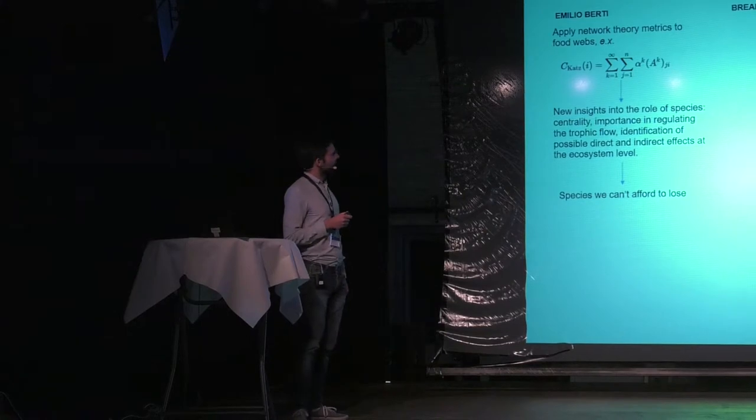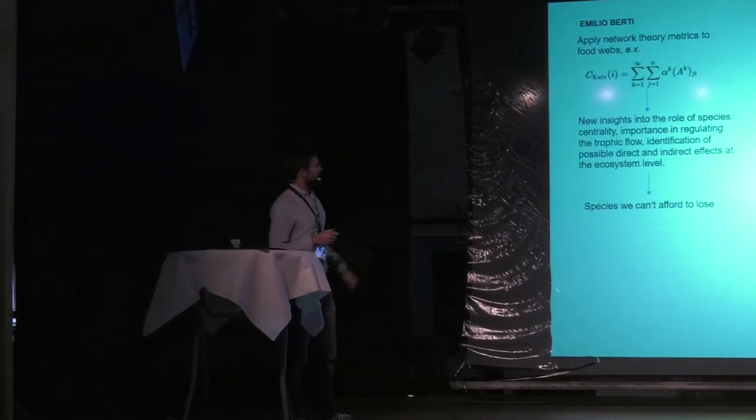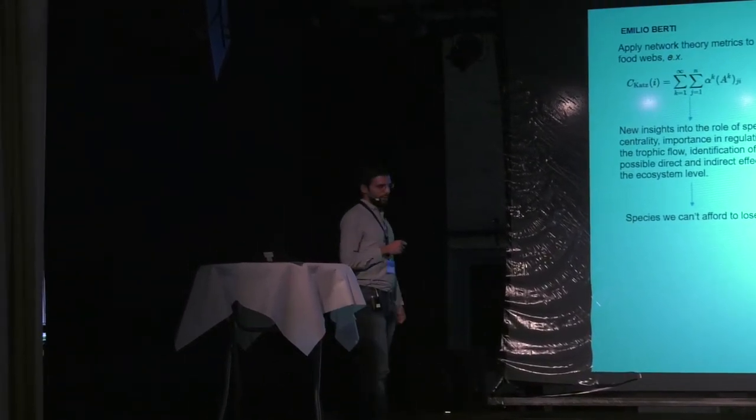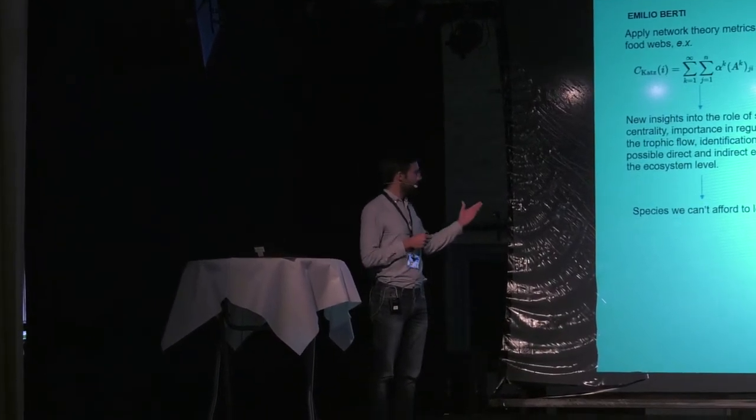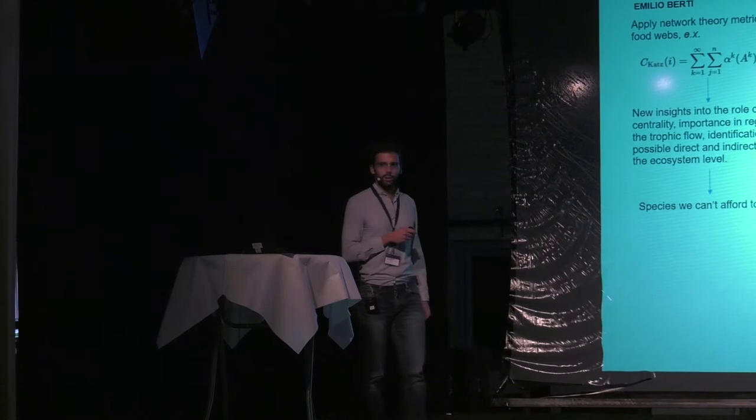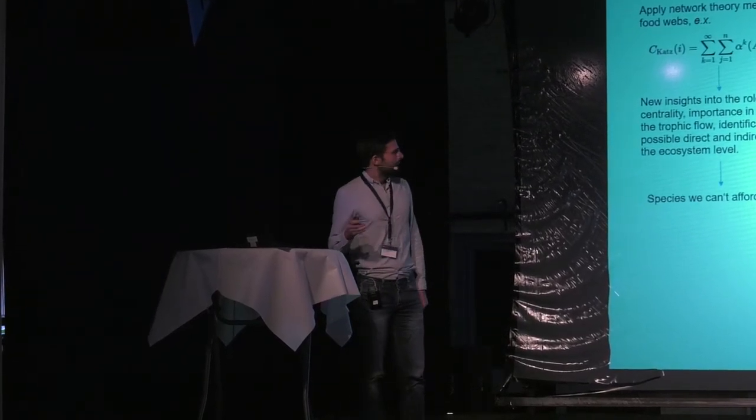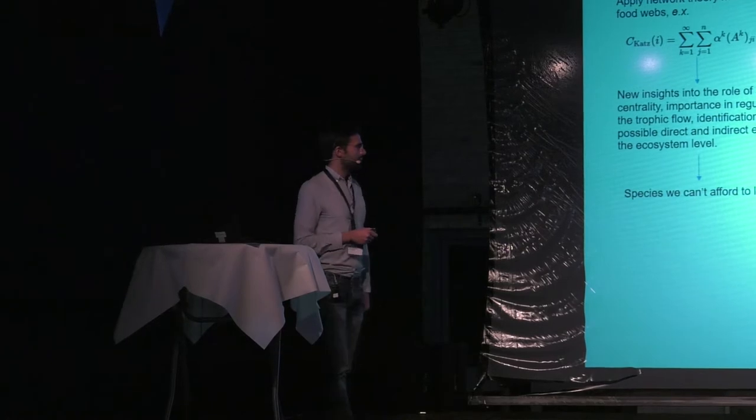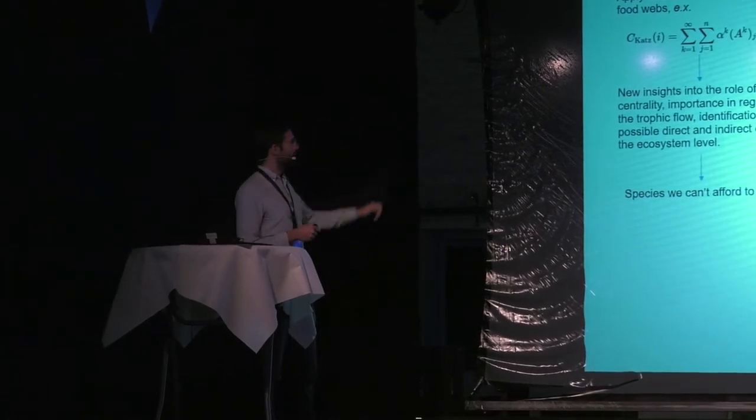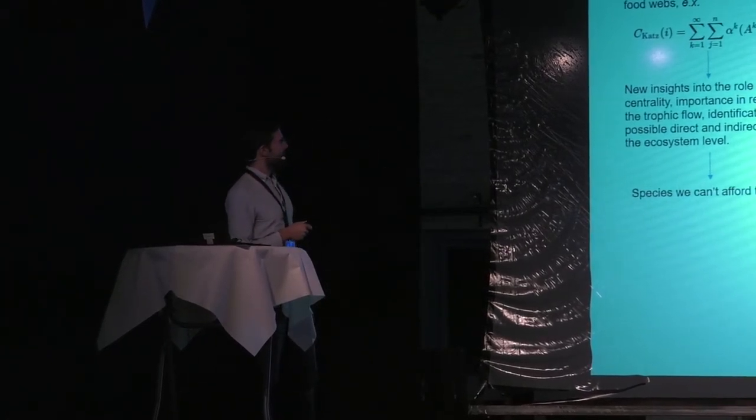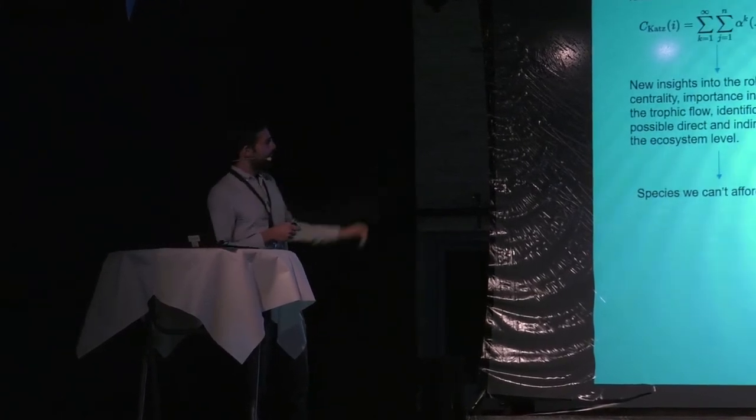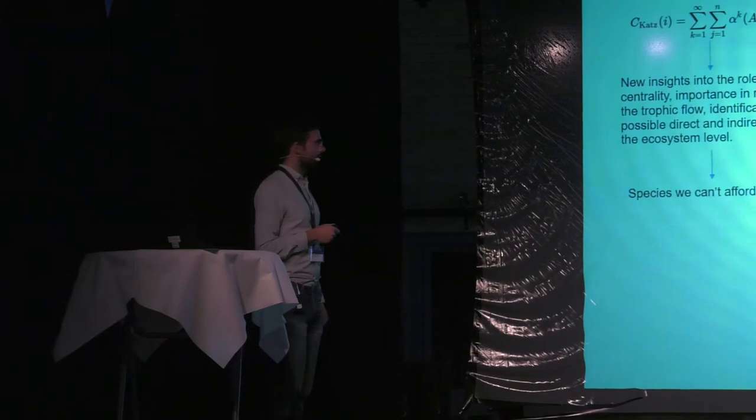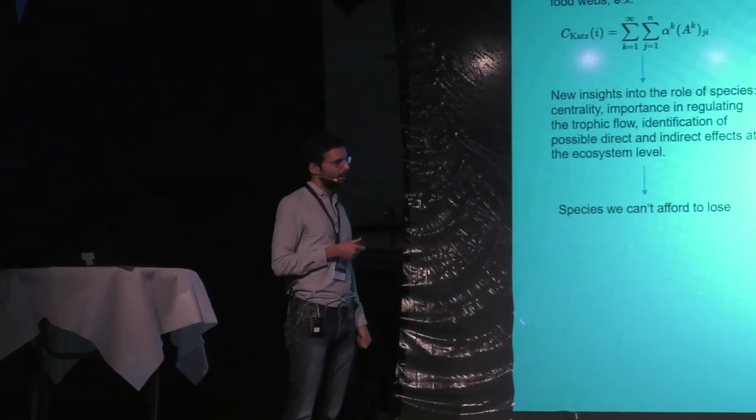I will show you an example. This is the cat's centrality, which gives us information about how many species a particular node will interact with. I scaled the Serengeti ecosystem food web, which is this one, for every species for its particular cat's centrality.